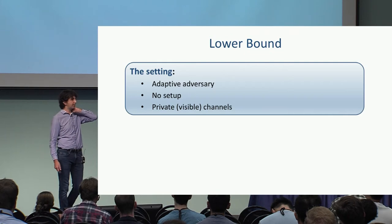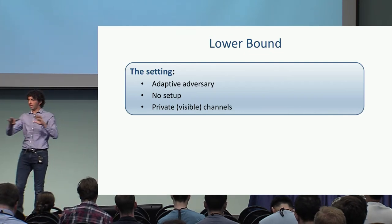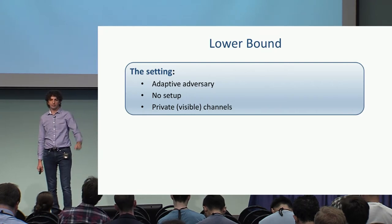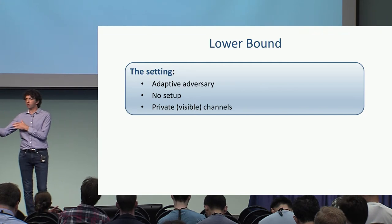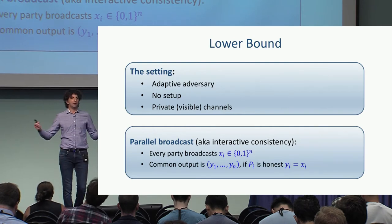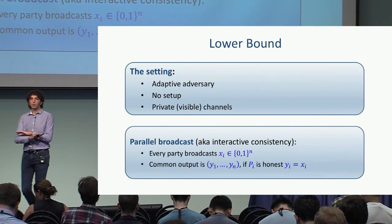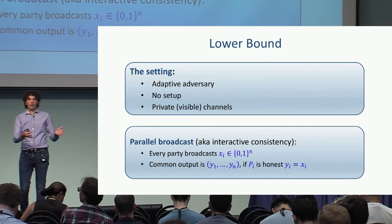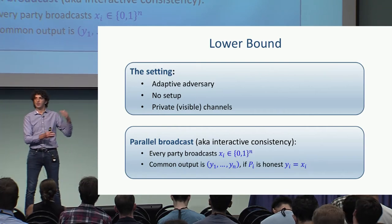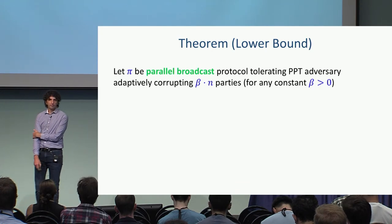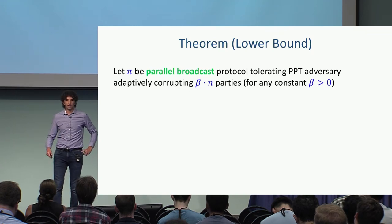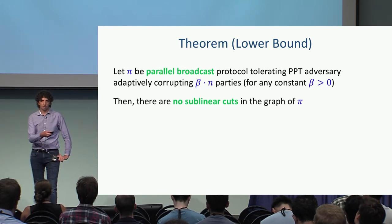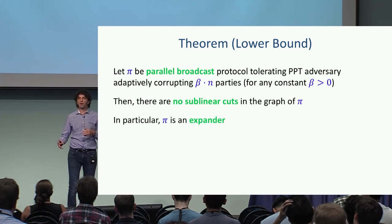The statement: the setting is adaptive corruptions, no setup, and private channels — standard private channels where the adversary can't see honest-to-honest communication. These properties — no setup and private channels — differ from the upper bound setting for adaptive corruptions. We look at parallel broadcast, or interactive consistency, as the function we're attacking. This is a function requiring no privacy; we only attack correctness. Every party has a value and broadcasts it; the output is a vector where if the i-th party is honest, the i-th coordinate is its input. If we have a protocol for parallel broadcast tolerating a constant fraction of adaptive corruptions, then there cannot be any sublinear cut in the communication graph — and in particular, the graph must be an expander.